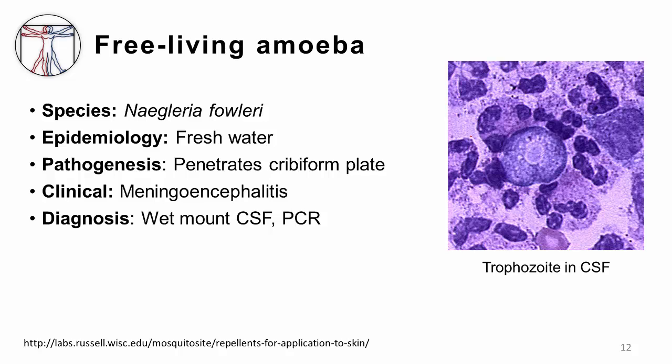The last protozoa that can cause CNS infection is one of the free-living amoeba — Naegleria fowleri. This protozoa lives in fresh water, can penetrate through the cribriform plate, and cause meningoencephalitis, presenting with headache, fever, and stiff neck. It is almost universally fatal and very hard to treat. Diagnosis is usually made on wet mount of cerebrospinal fluid, or by PCR, or unfortunately at autopsy. In the image, you can see a trophozoite of Naegleria fowleri in the CSF.